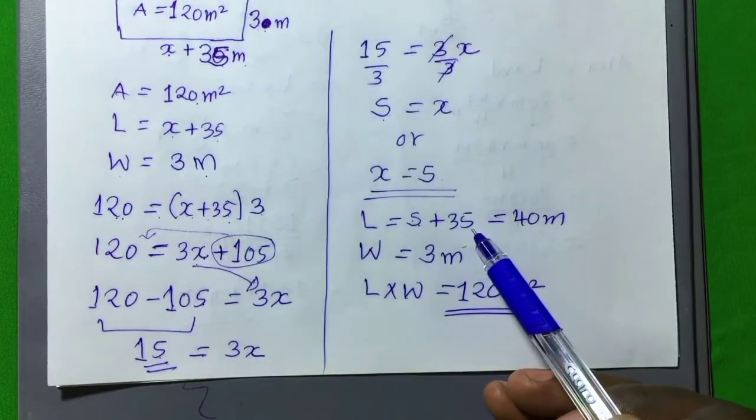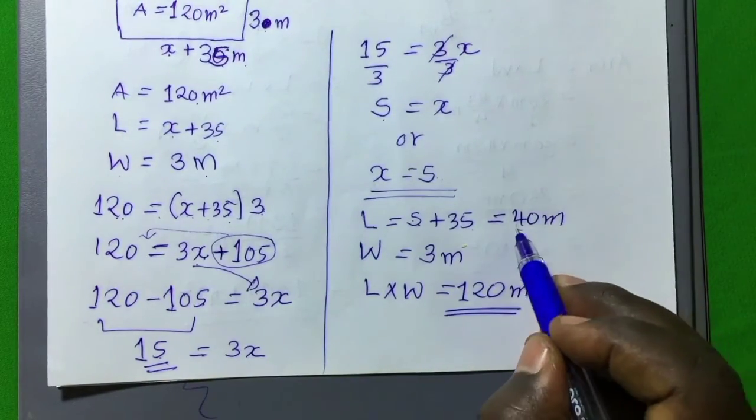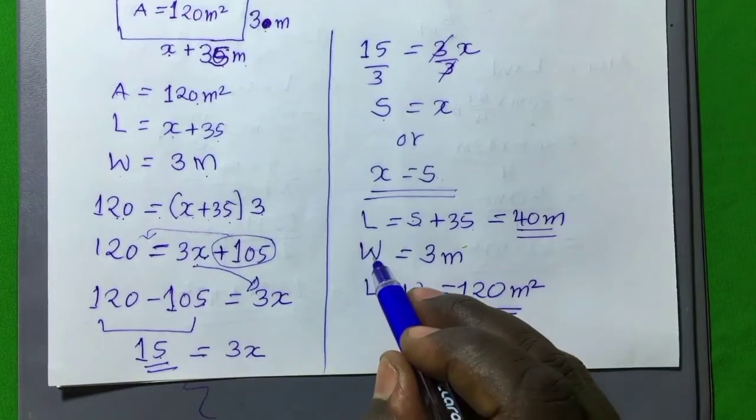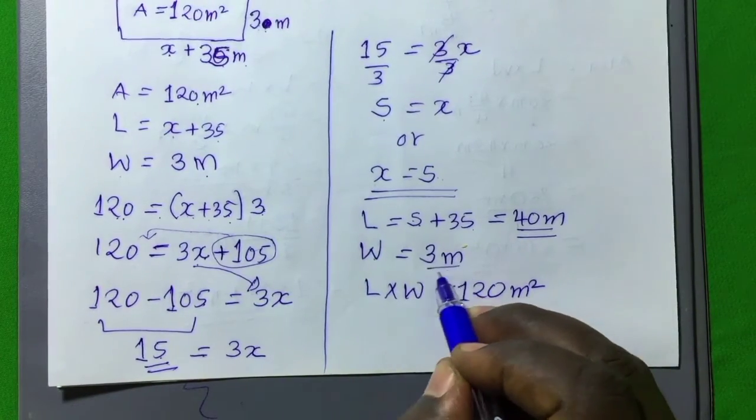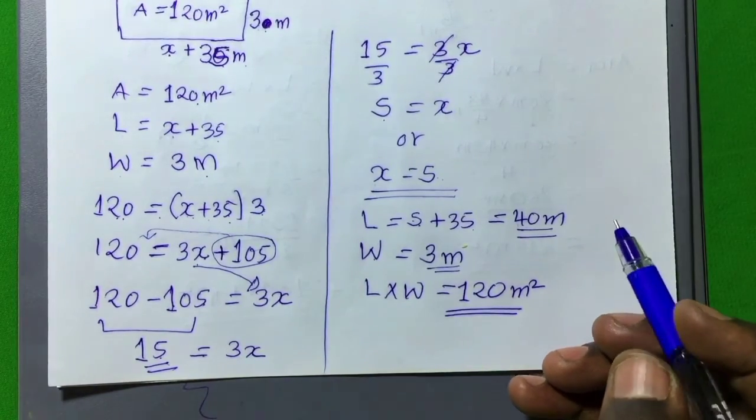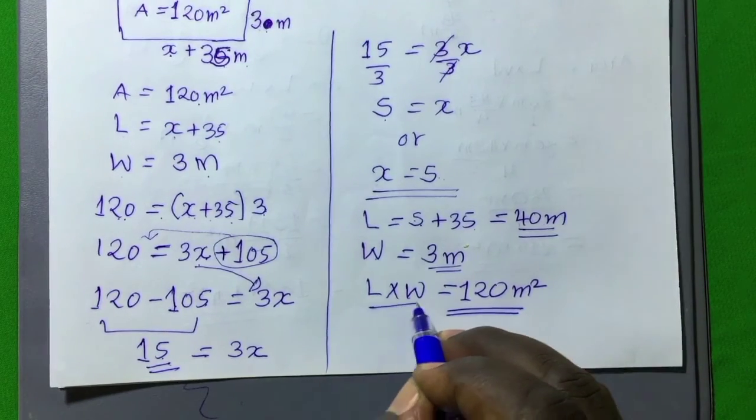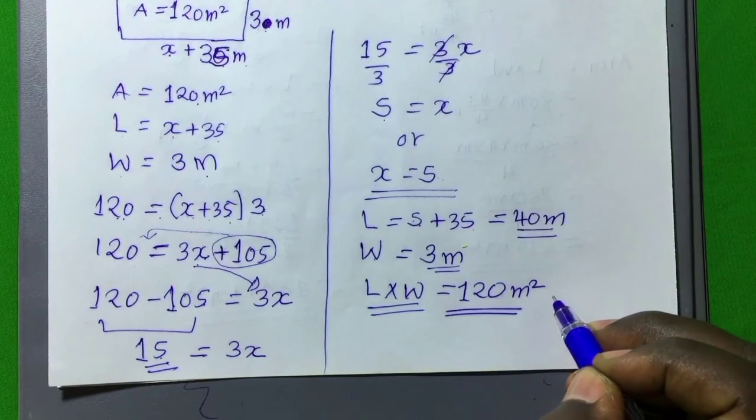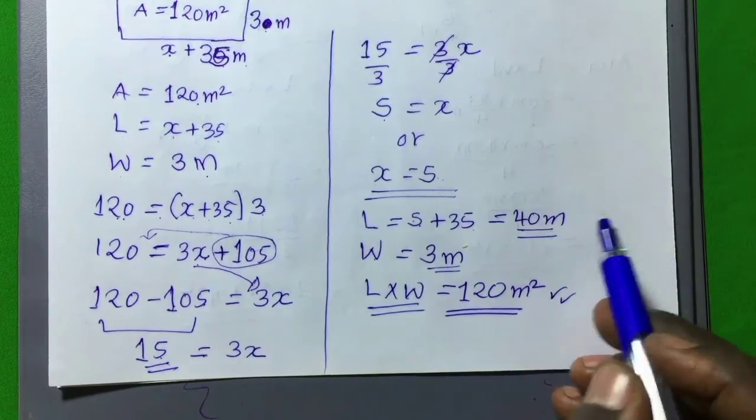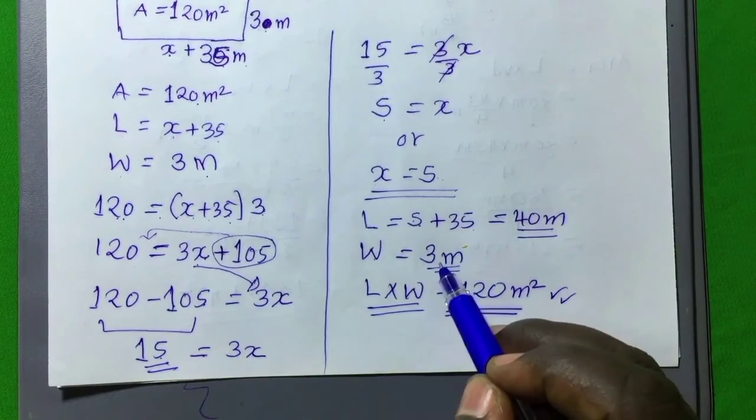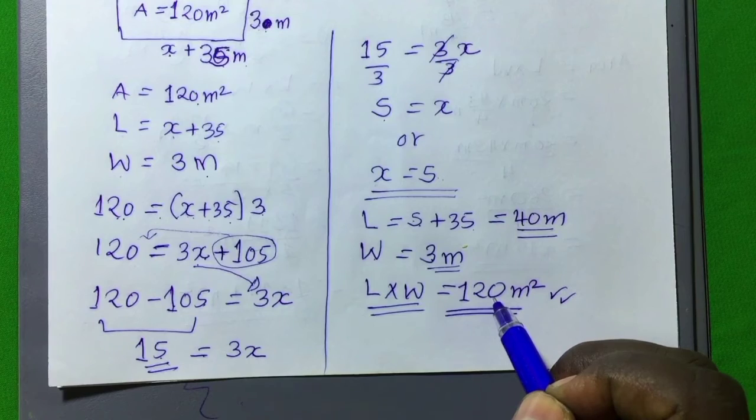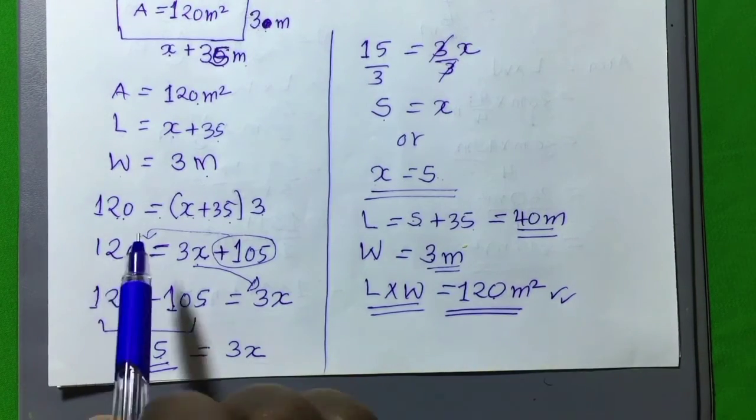Now, here now we have the value of x, which is equal to 5, then plus 35 will have 40, and then the value of W, which is already 3. Let's now prove our answer to be true. When we multiply L by W, can we get 120 meters squared? Obviously yes.